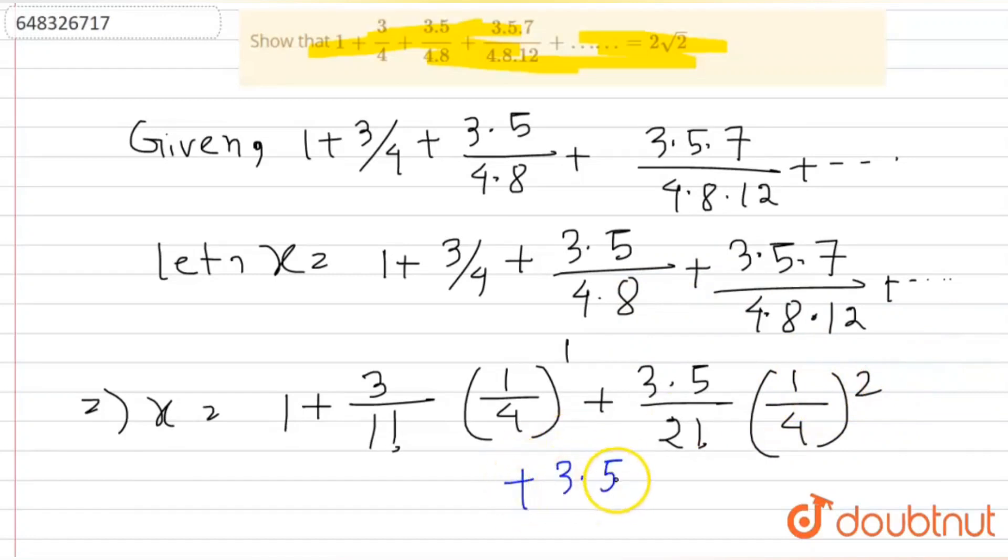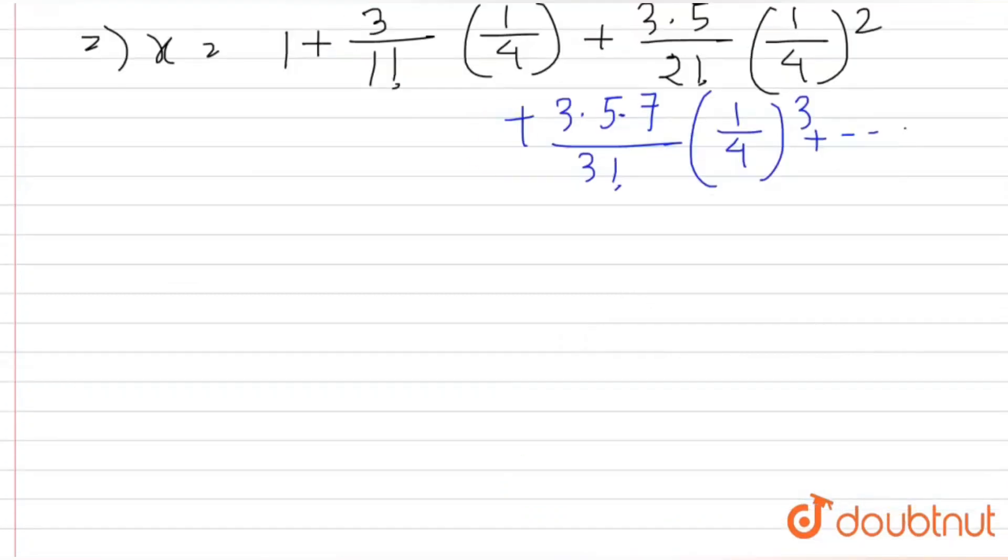5 into 7 by 3 factorial by 1 by 4 cube plus so on.